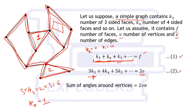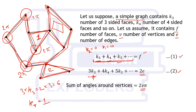The sum of all angles around all vertices equals 2V times pi, because each vertex has a full angle of 2pi around it and there are V vertices. We will represent this sum as T. This is our third result.